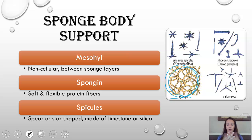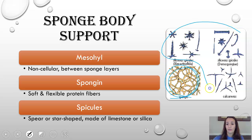The spicules — if you've ever been poked when you squeeze a sponge, or touched sponges that are a little more solid — spicules are what gives it that rigid structure. These can be spear-shaped, star-shaped, or any of these other structures shown here. They're made of either limestone or silica — silica is kind of like glass, so you'll get glass sponges — or limestone, which has a calcium component.